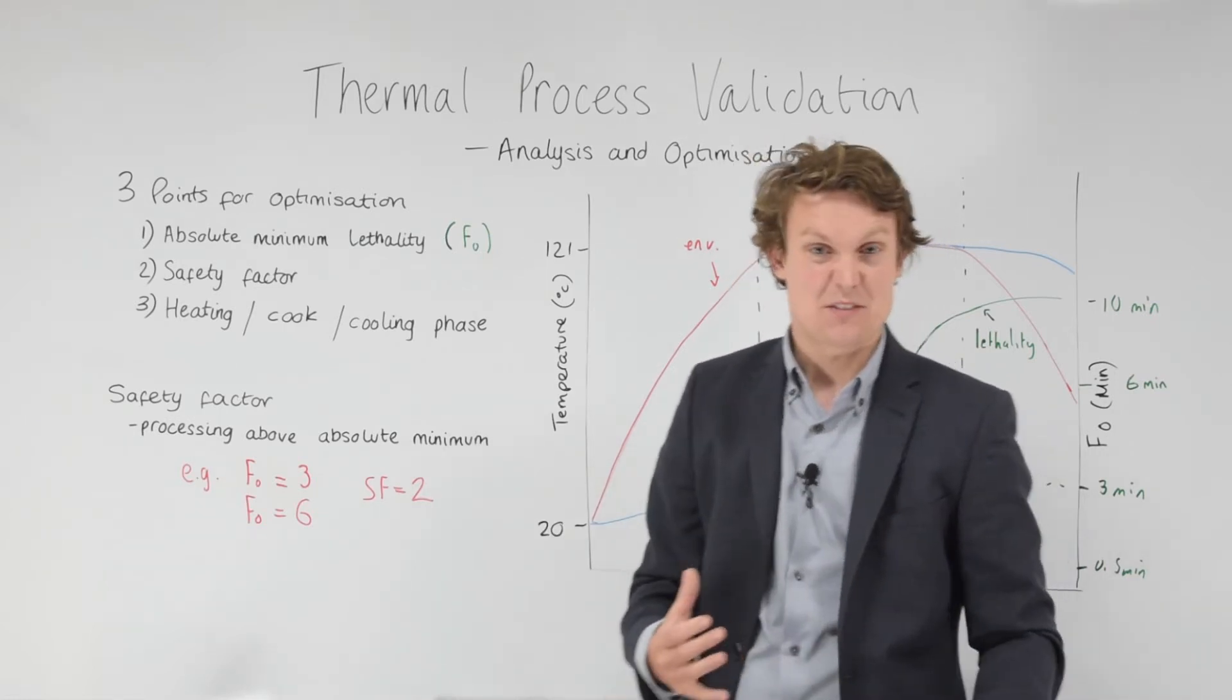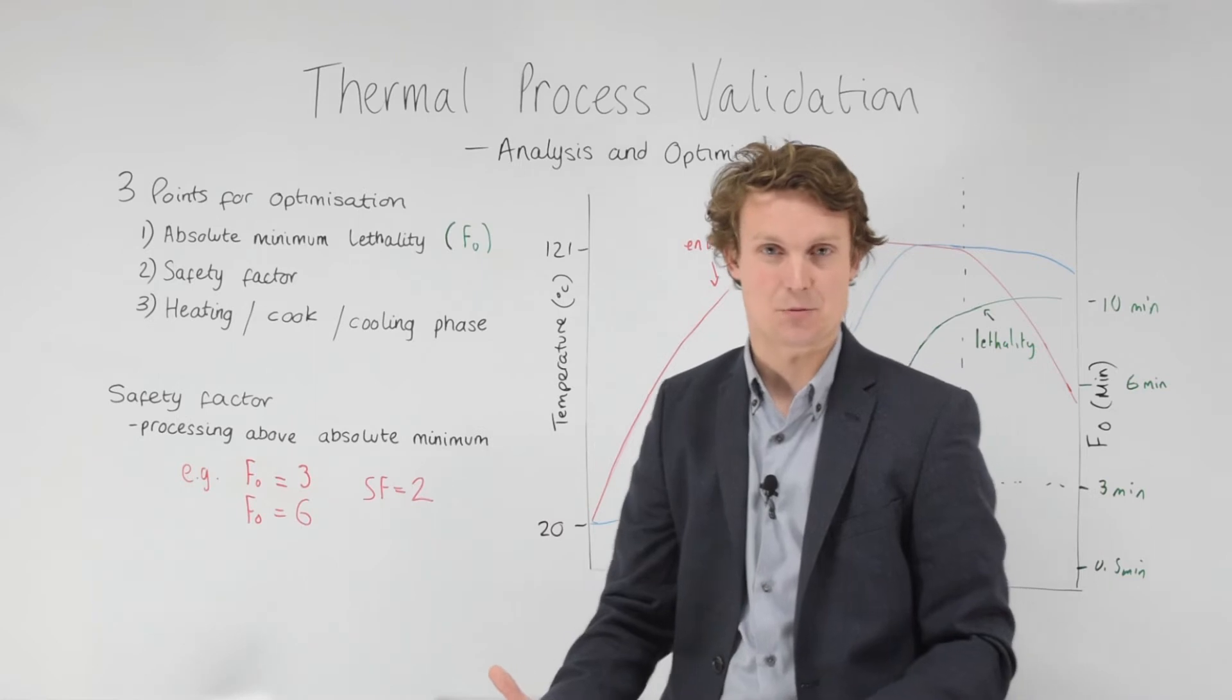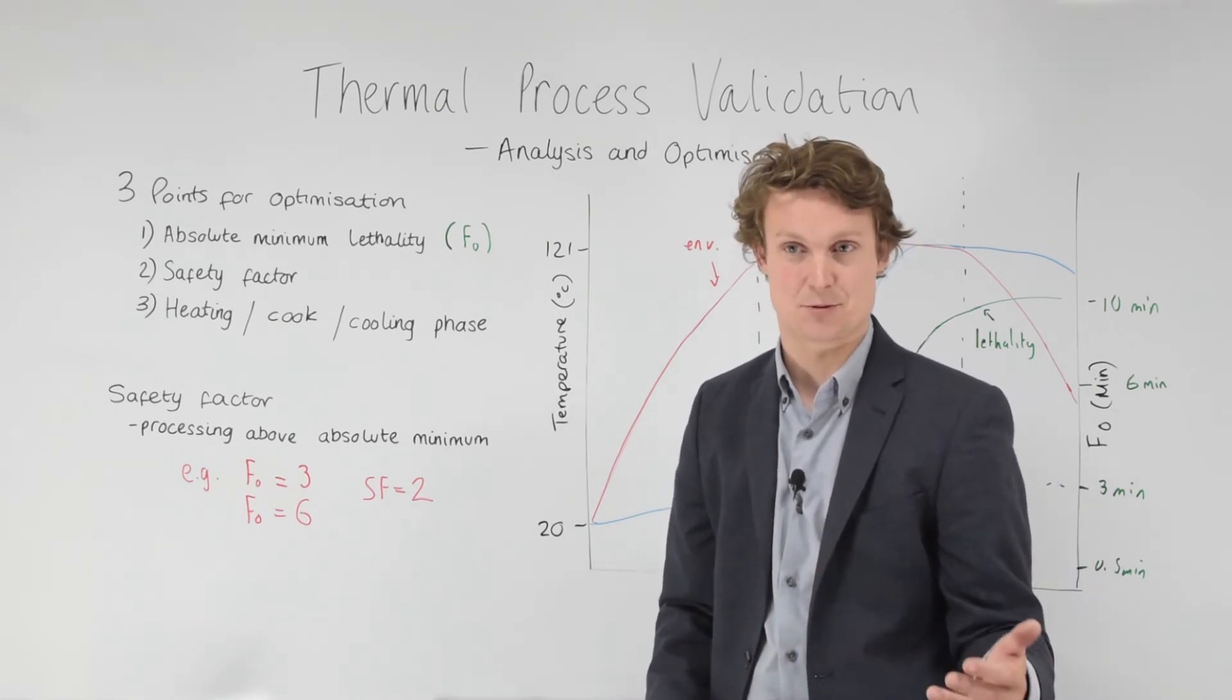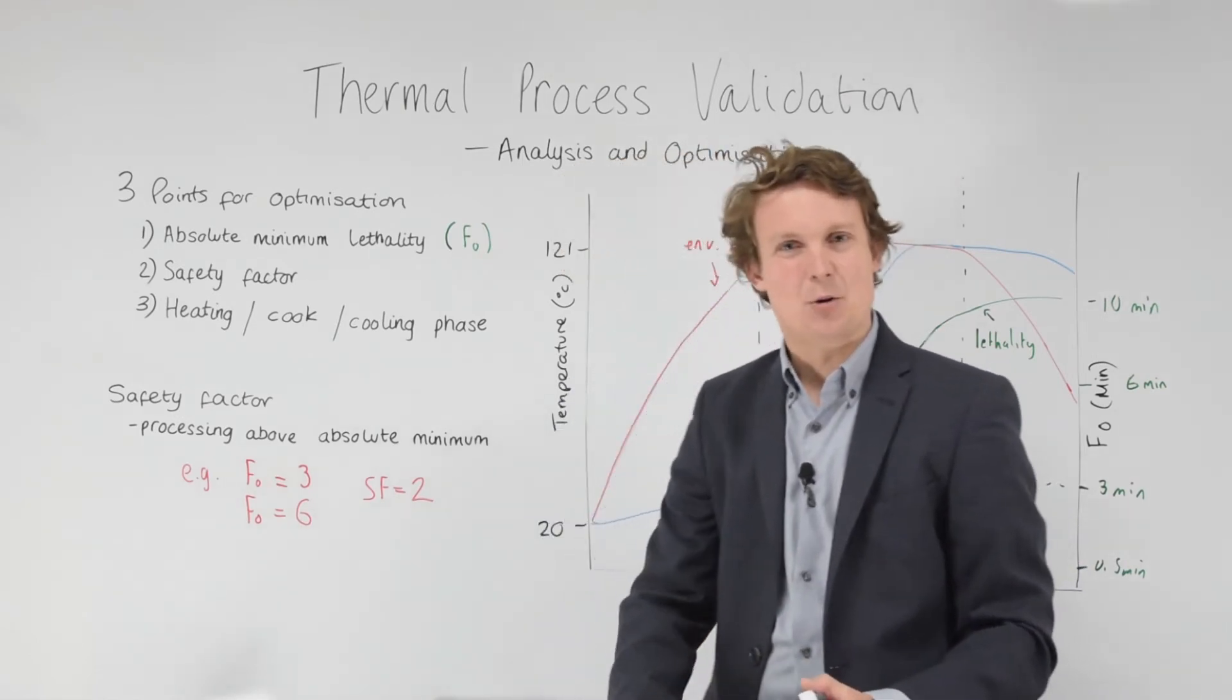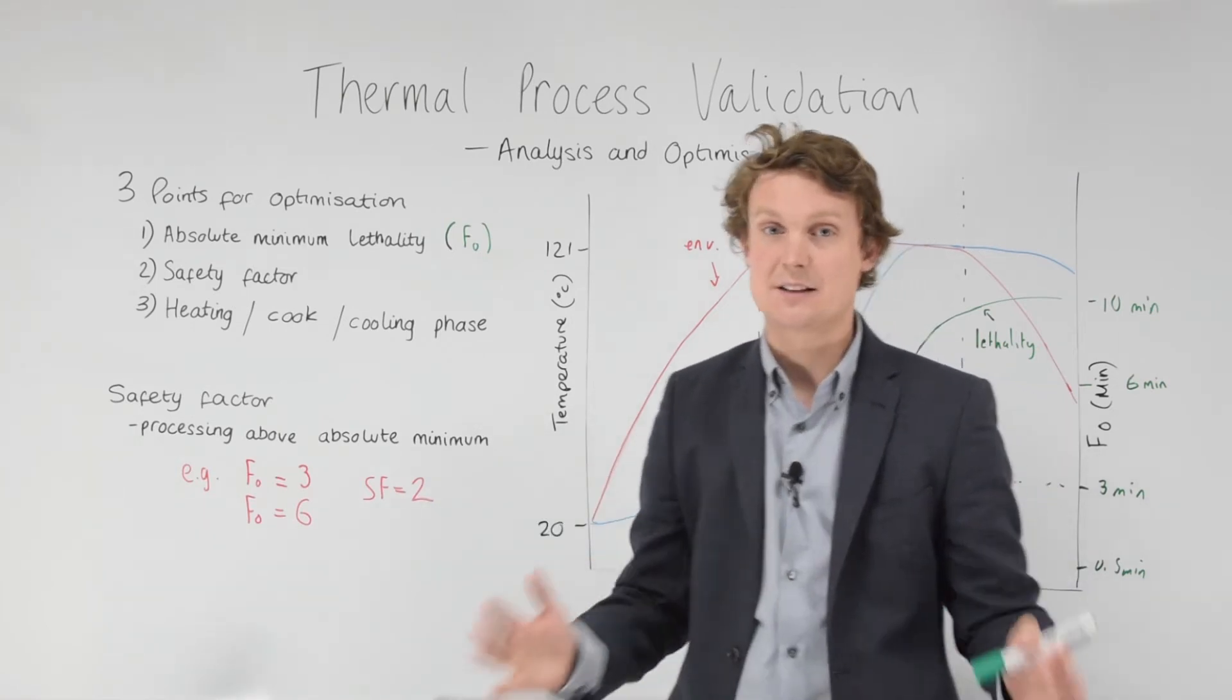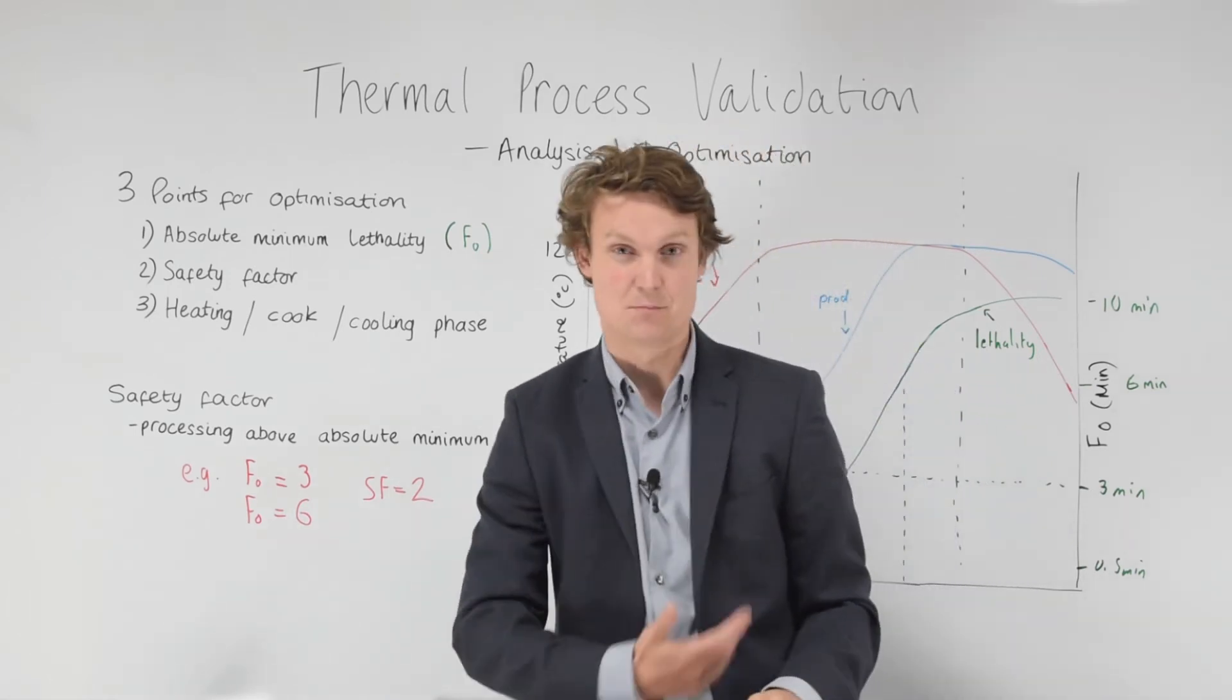The safety factor can depend on a number of things. We're really looking at how robust that thermal process is, how variable it is, how repeatable it is. If we've done our validation and we've got a number of different results for lethality of products, different samples of products, we need to be thinking about how consistent those results are. The more consistent, the lower number you can have for your safety factor. If they're very inconsistent, we might be looking for safety factors of three or four, having an in-house F0 target of over ten perhaps.